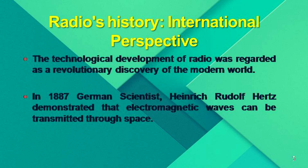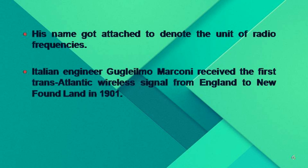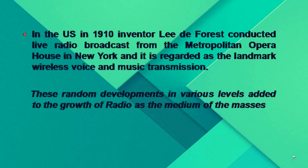In 1887, German scientist Heinrich Rudolf Hertz demonstrated that electromagnetic waves can be transmitted through space. His name got attached to denote the unit of radio frequencies, and that is why radio frequencies are measured in hertz. The Italian engineer Guillermo Marconi received the first transatlantic wireless signal from England to Newfoundland in 1901. In the US in 1910, inventor Lee de Forrest conducted a live radio broadcast from the Metropolitan Opera House in New York, regarded as a landmark wireless voice and music transmission.